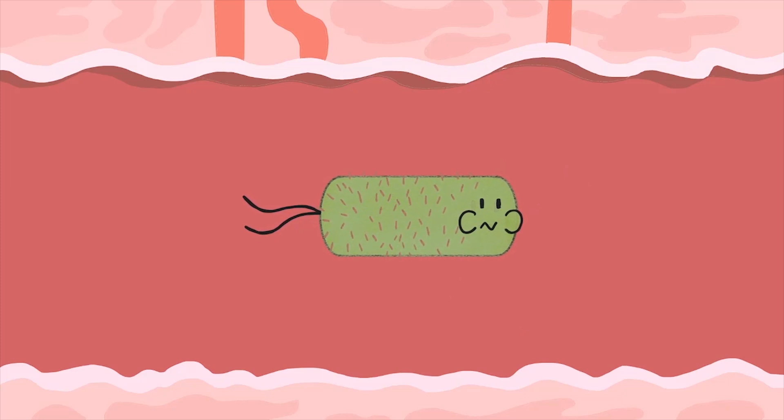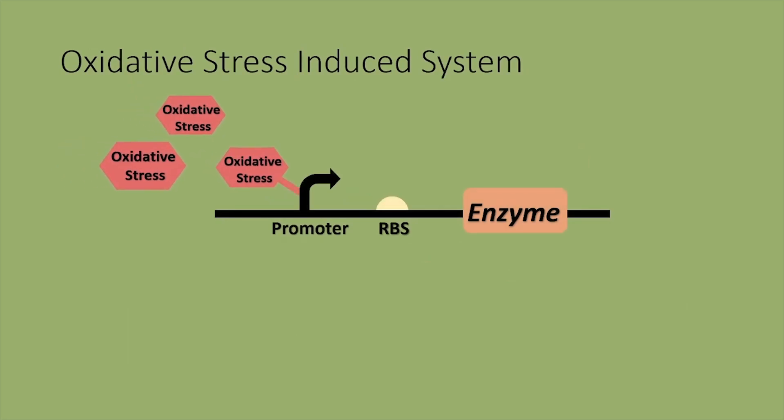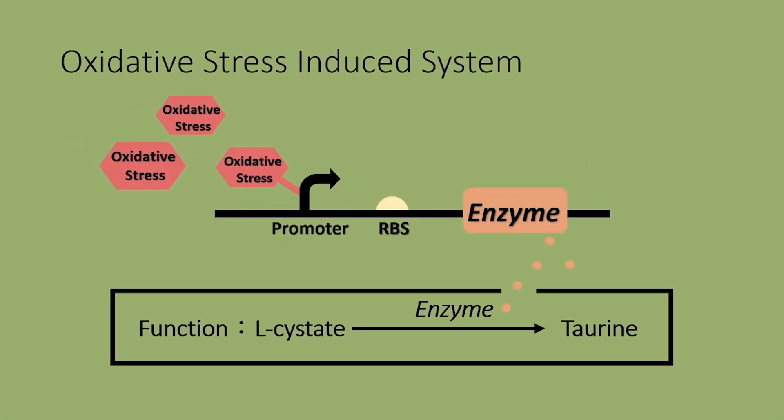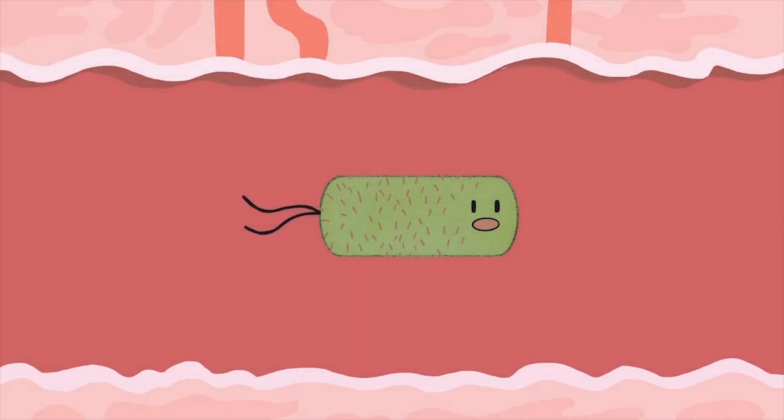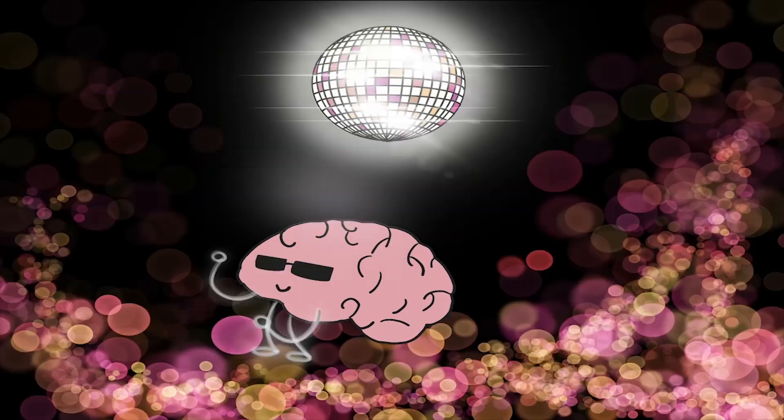After the biomarkers are sensed, the interferon gamma-induced system converts L-cystine into L-cystate, where the oxidative stress-induced system converts L-cystate into taurine. Taurine is then released by E. coli. It goes back to the circulatory system through the gut-brain axis, then reaches the brain.